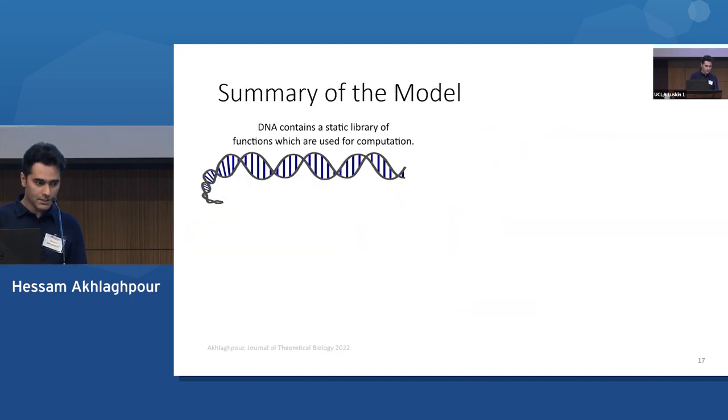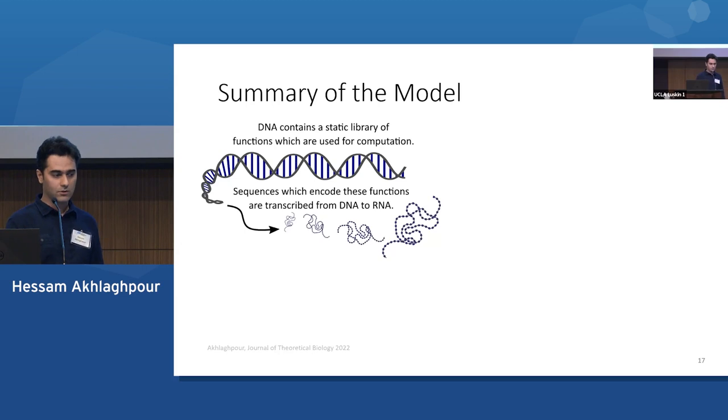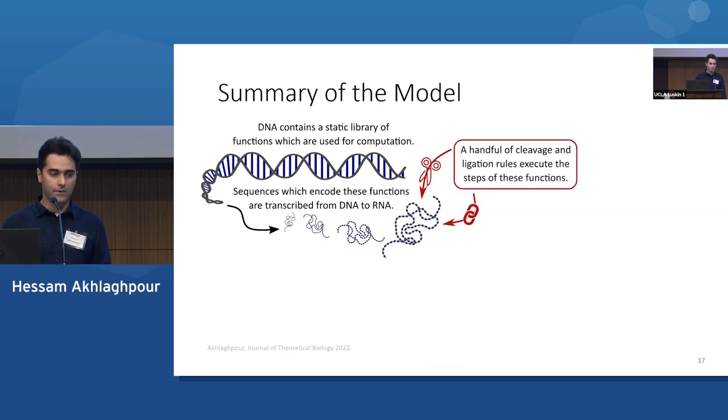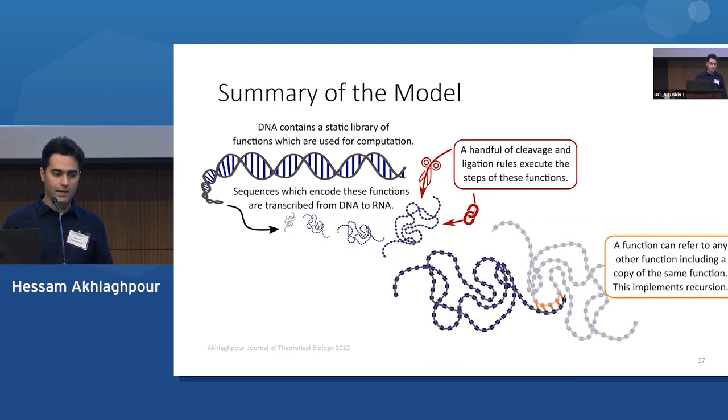So to summarize the model: DNA contains a static library of functions which are used for computation. And through transcription, you can get many copies of the same function just floating around in the cell. A handful of cleavage and ligation rules execute the steps of these functions. And crucially, a function can refer to other functions, including a copy of the same function. And this implements recursion.